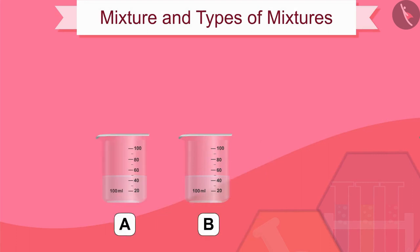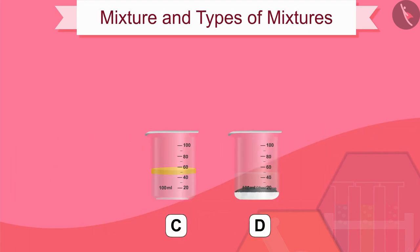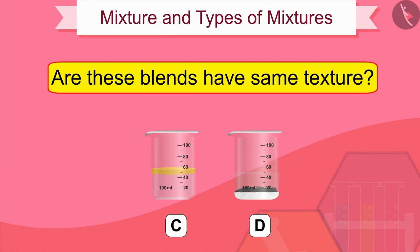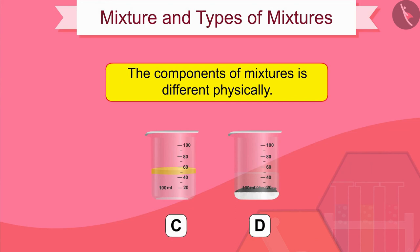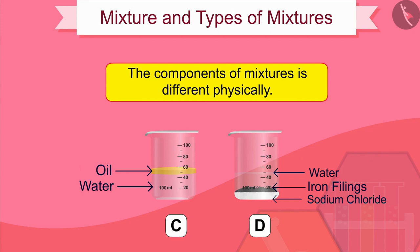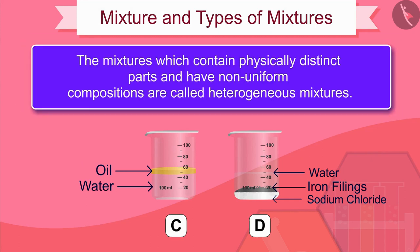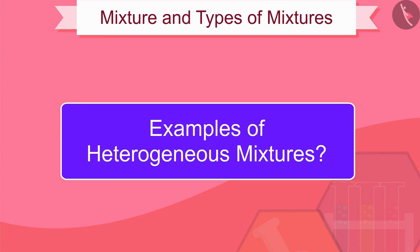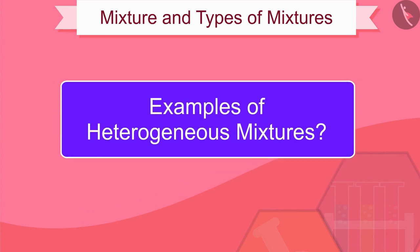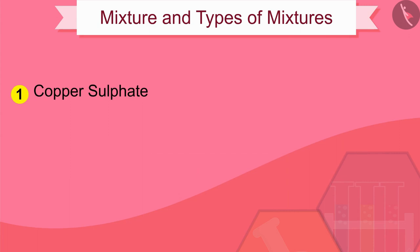Now look at the mixtures in beakers C and D — are these blends of the same texture? The components of mixtures in C and D are different physically. Mixtures which contain physically distinct parts and have non-uniform compositions are called heterogeneous mixtures.